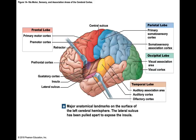The auditory association area is right next to the auditory cortex. The auditory cortex receives sound, and the auditory association area helps you recognize words from that sound. Those are the sensory association areas.